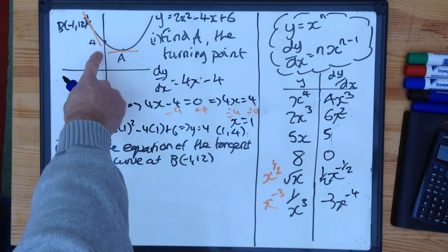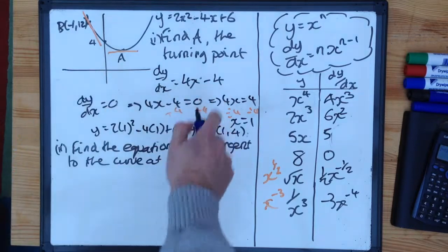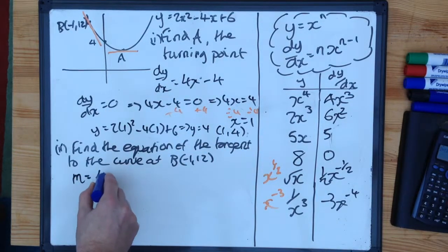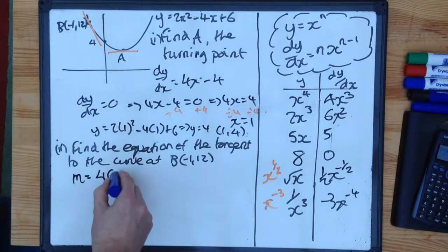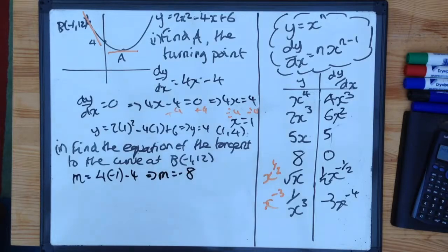If I'm going to find the equation of this line, then I'm going to need the gradient. So what I do is I put my x value into this equation. So my gradient, m, is going to be equal to 4 times by whatever x is. In this case, minus 1, minus 4. If I work that out, I get m is equal to minus 8.